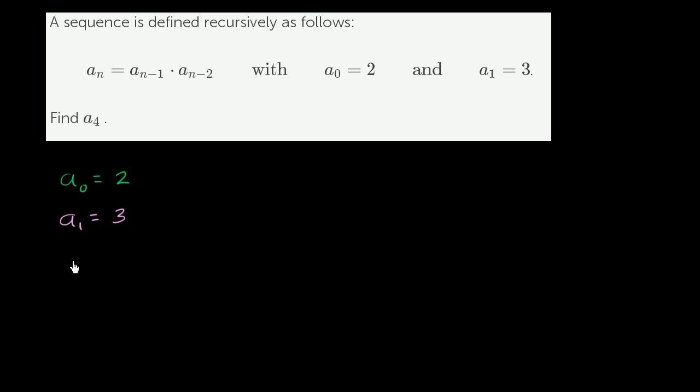Now we can think about what a sub 2 is. They tell us that a sub 2 is going to be a sub 2 minus 1, so that's a sub 1, times a sub 2 minus 2, that's a sub 0. They already told us what a sub 1 and a sub 0 is. This is 3, this is 2, so it's 3 times 2, which is equal to 6.